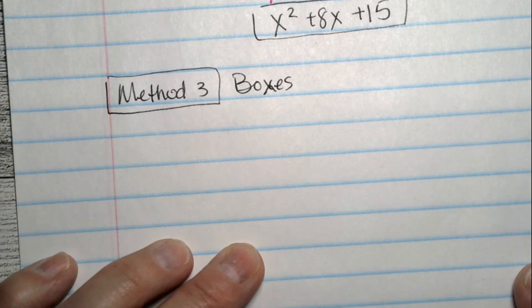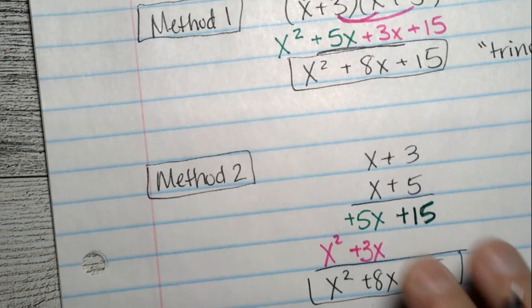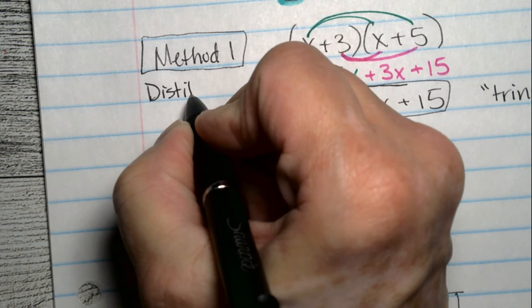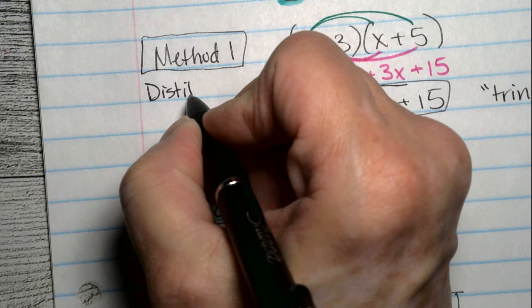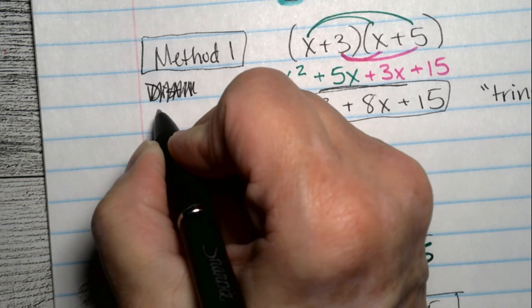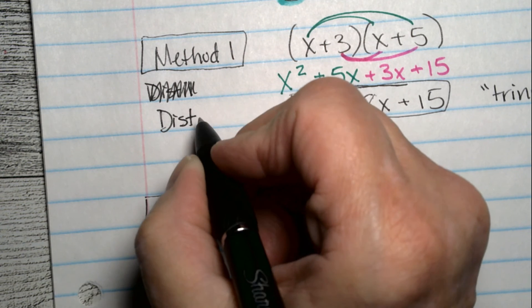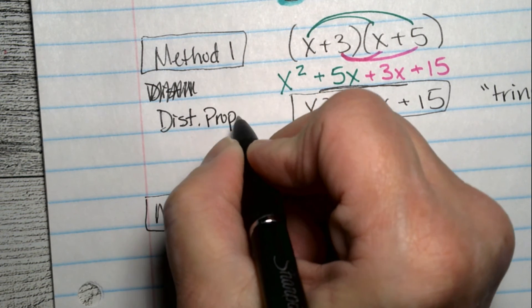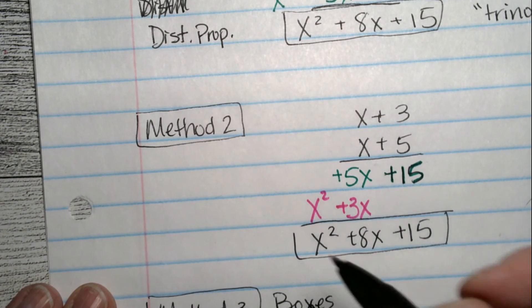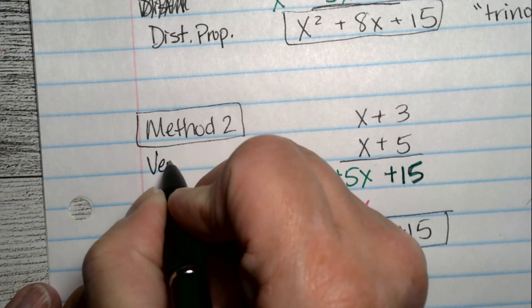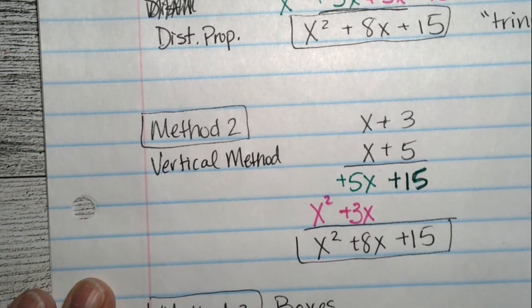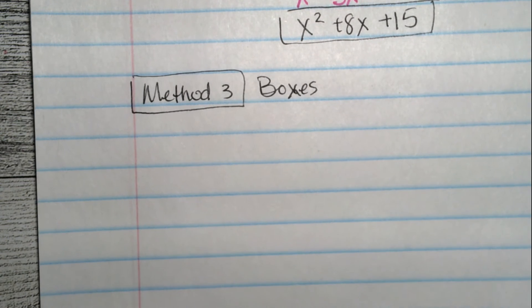I guess if I had to name all these. This one would be boxes. That first method would be distributive property. It's too early in the morning for me. What is it? 6:25 a.m. We're just going to abbreviate it because spelling is not spelling this morning. Method 2, I guess I call that the vertical method. Okay. And then the last one will be boxes. Alright.